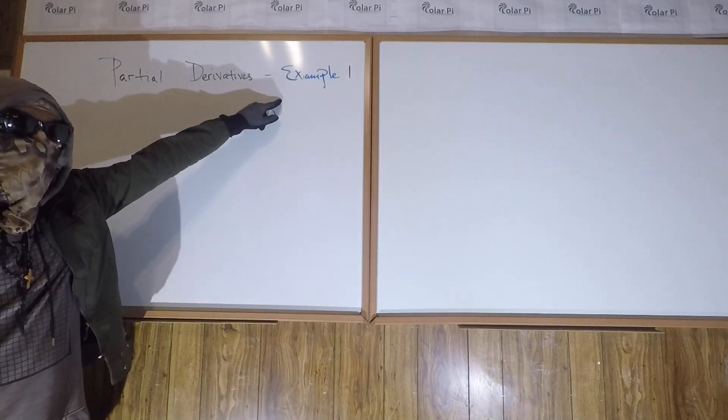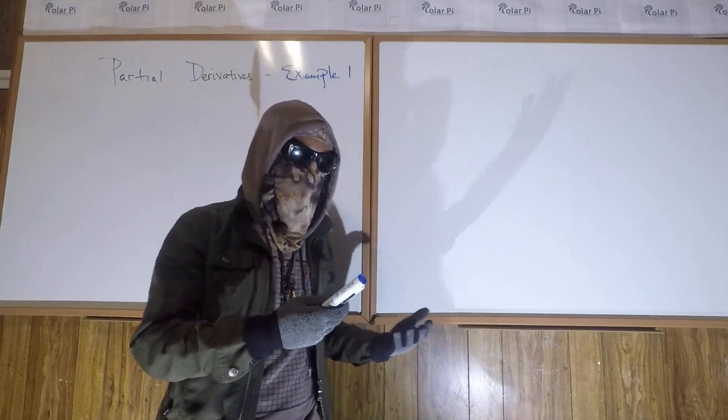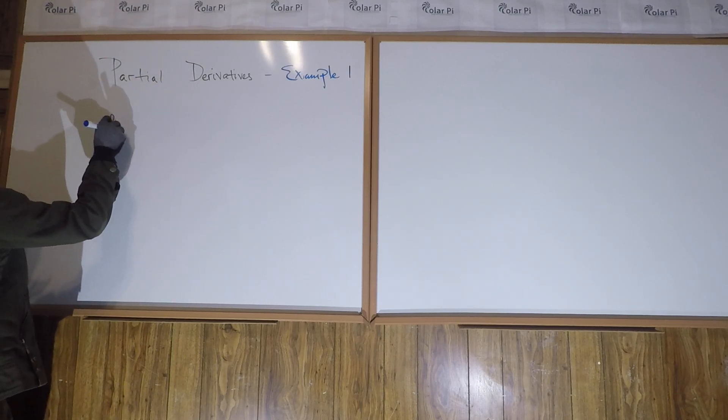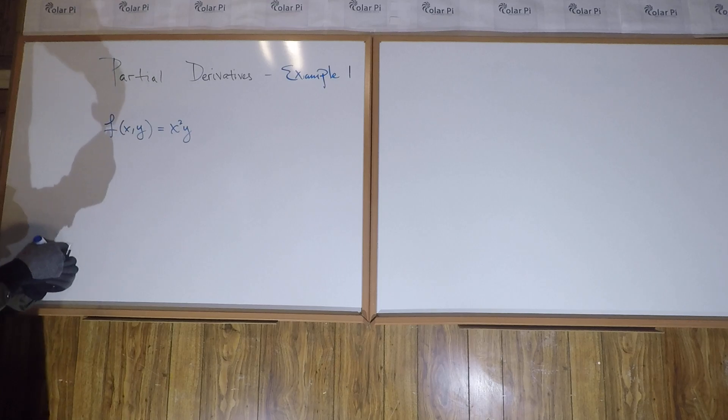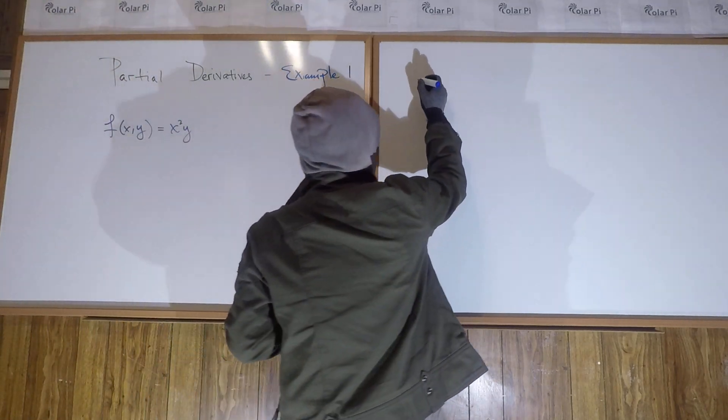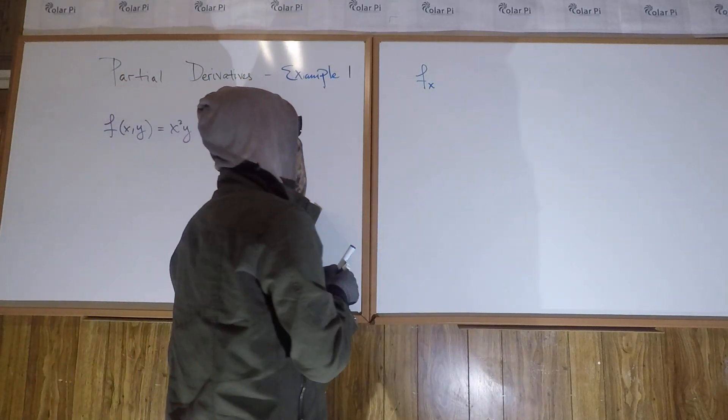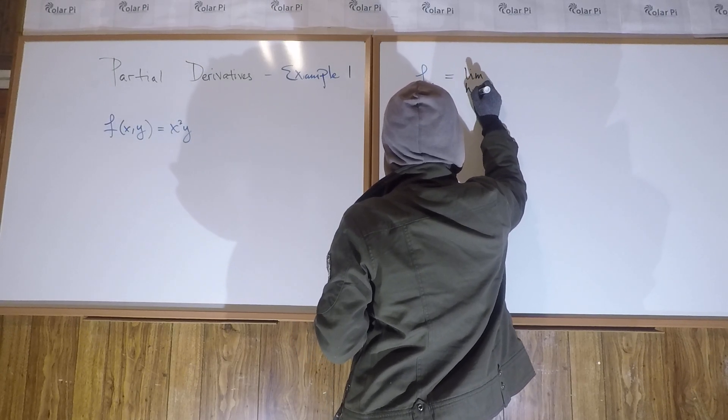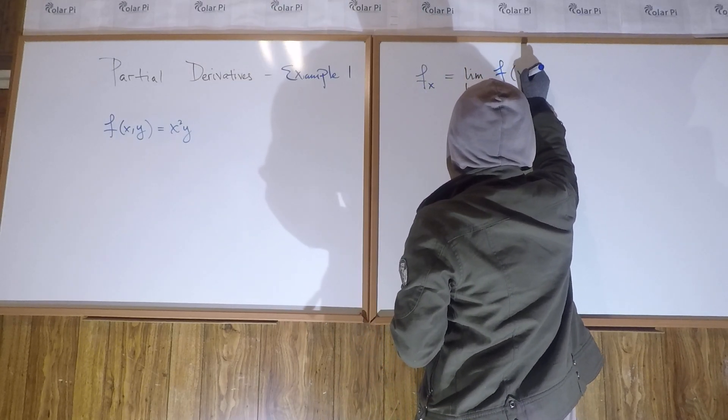One of the things that we did there in example 0 is we came up with the formal limit definition of a partial derivative. So in this video, in example 1, I'm going to show you how to use that formal limit definition of the partial derivative. In particular, consider the function f is equal to x squared y. Then in example 0 we said that the partial with respect to x, abbreviated like that, is equal to